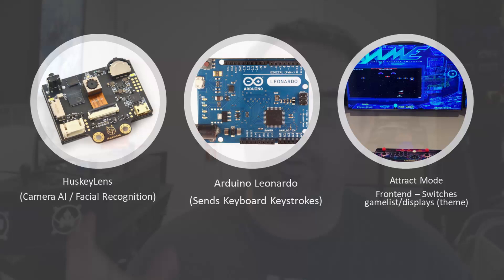In the second video I showed you the arcade portion of this using Attract Mode — I went over displays and how to switch them using keyboard shortcuts. In this video we're going to tie it all together, because the Arduino Leonardo is an Arduino that can emulate a keyboard. This means we can take the HuskyLens camera, take the images it recognizes, send them to the Arduino, have it emulate a key press, and then control Attract Mode.